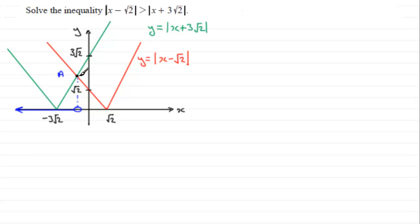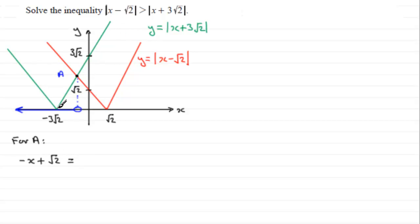There are two ways to find this x value and I'll show you both. In my preferred method, I look at where the negative part of the first mod function crosses the positive part of the second. The equation of the reflected part of the first line is minus x plus root 2, and this needs to equal x plus 3 root 2.